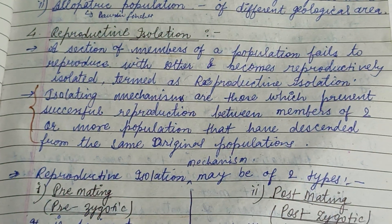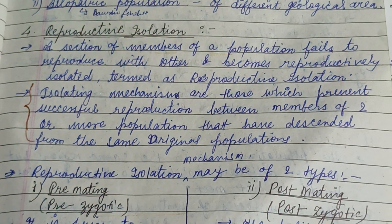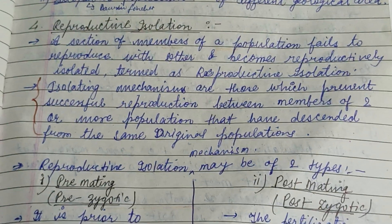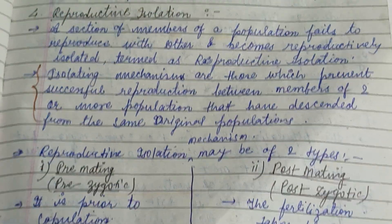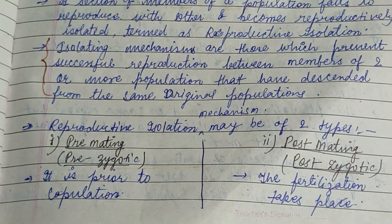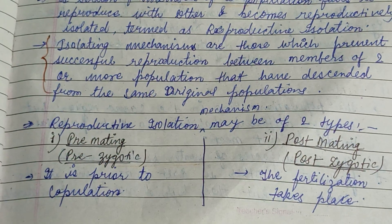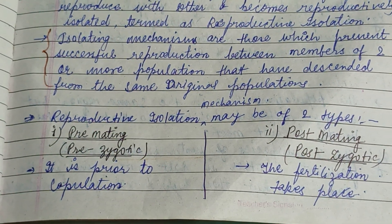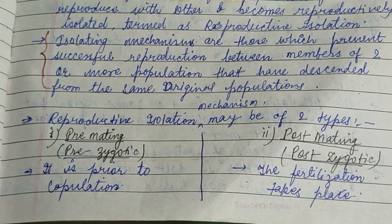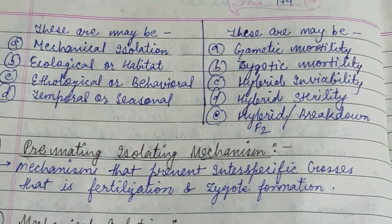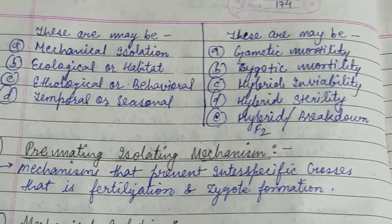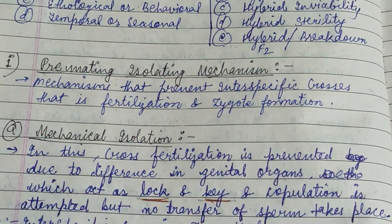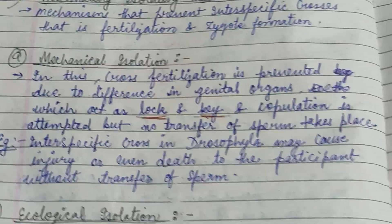Reproductive isolation is a process in which a section of members of the population fails to reproduce with each other and becomes reproductively isolated. It may be of two types: pre-mating or pre-zygotic, and post-mating or post-zygotic, and is further classified into many subtypes. Pre-mating is the mechanism in which they prevent interspecific crosses, that is fertilization and zygote formation.